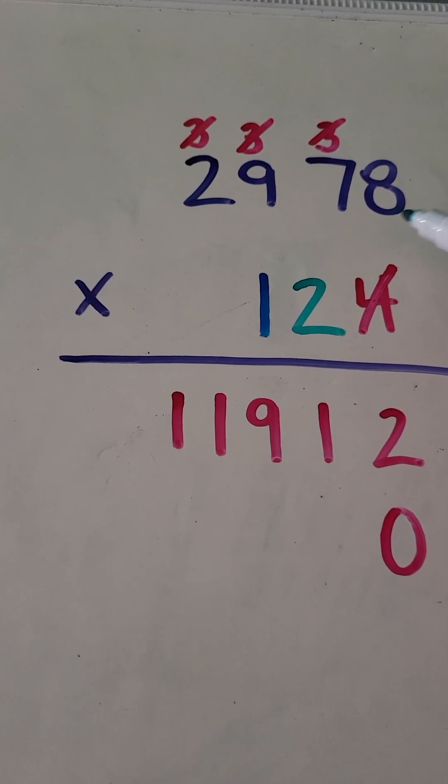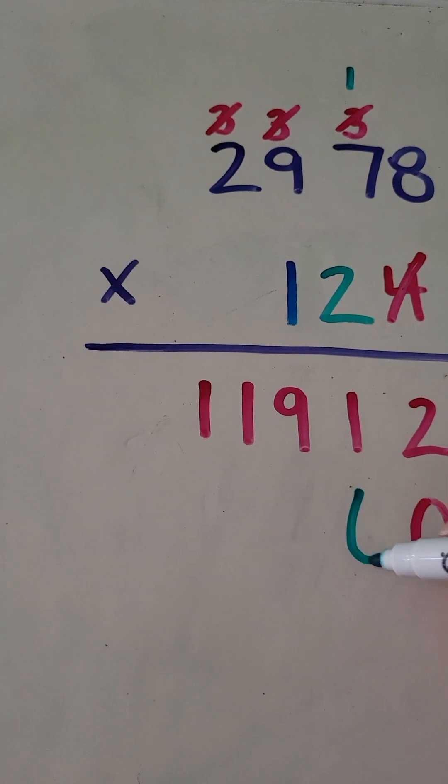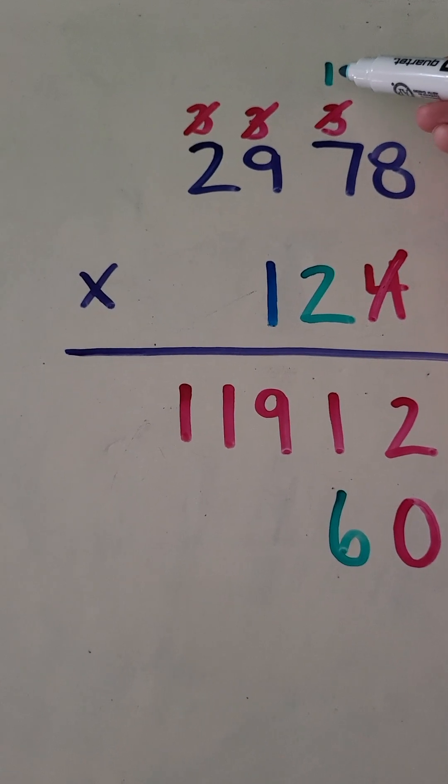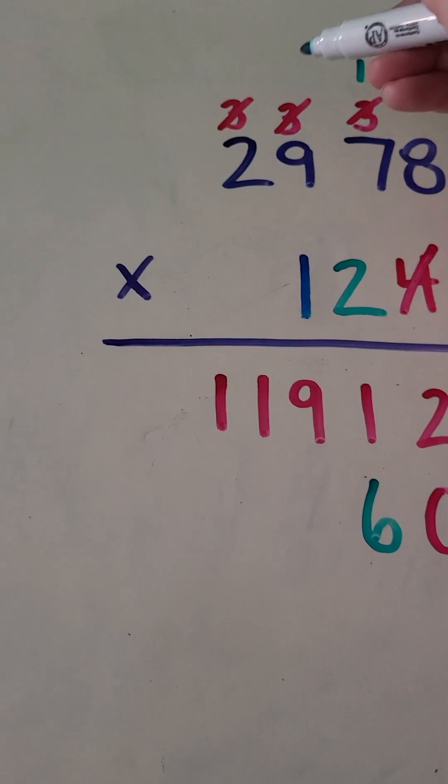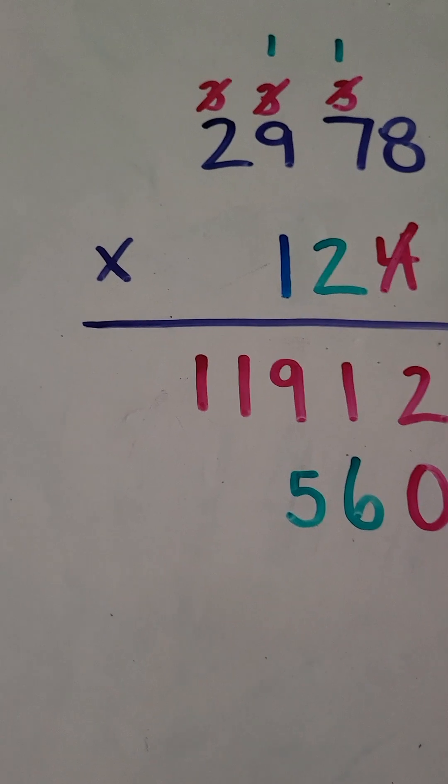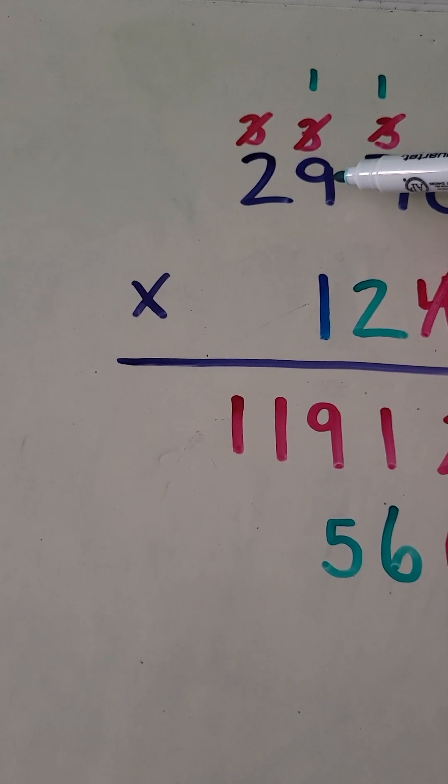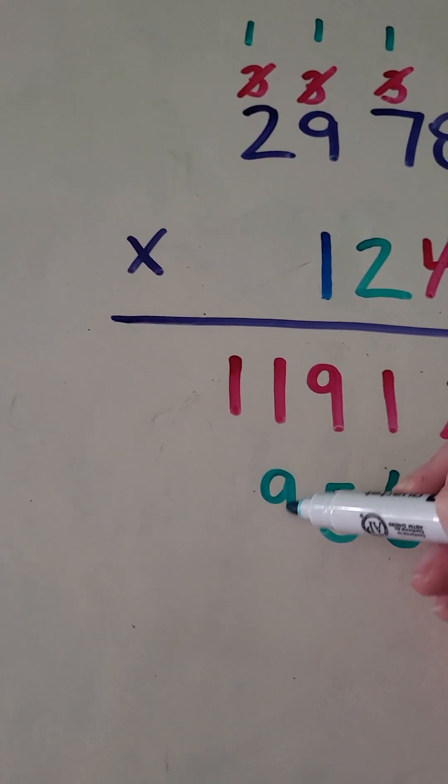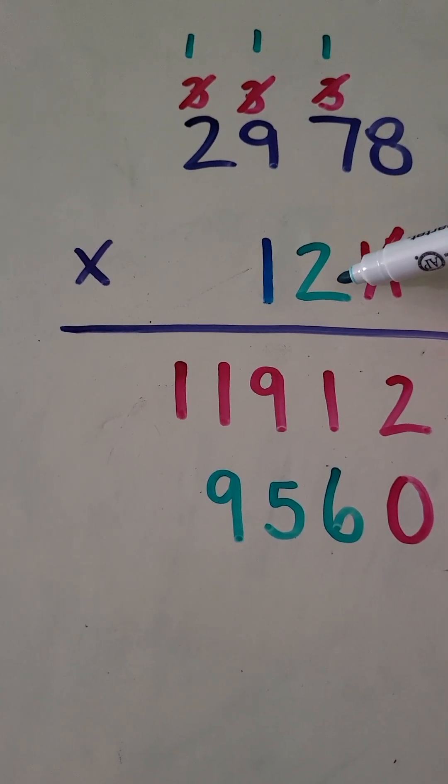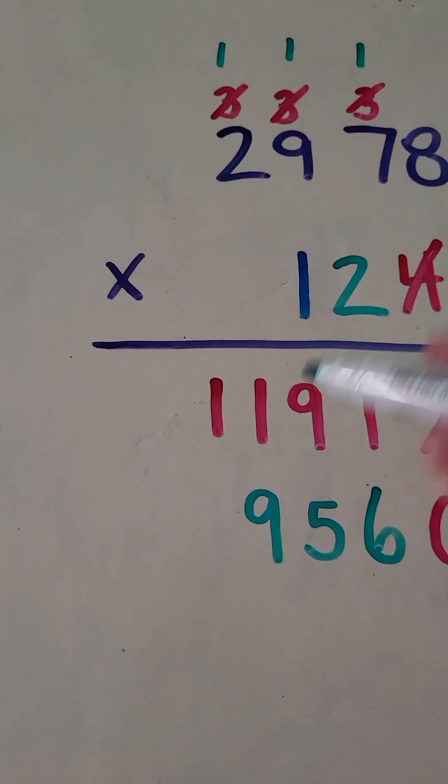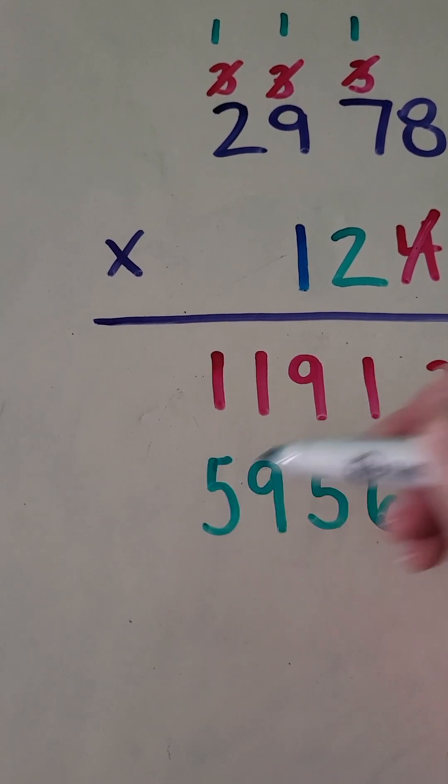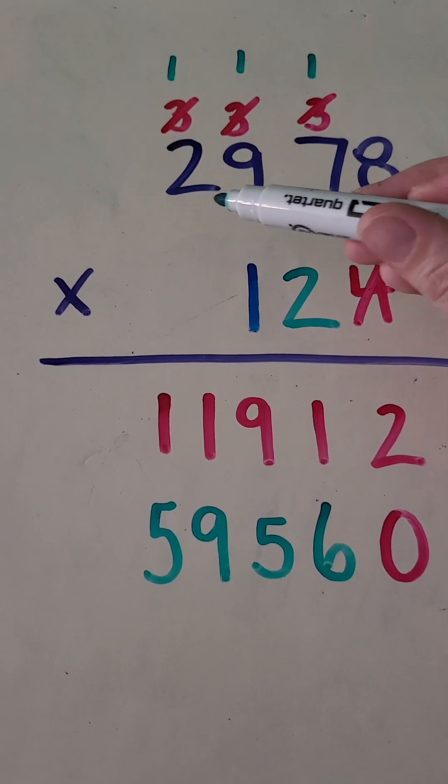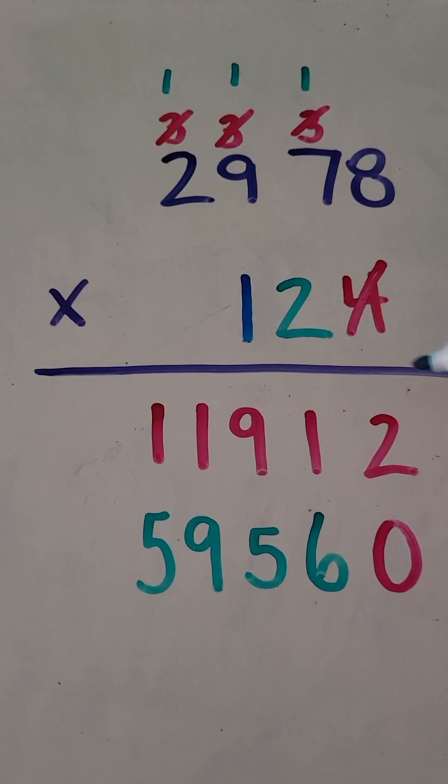So two times eight is 16. Two times seven is 14 plus one is 15. Two times nine is 18 plus one is 19. And then two times two is four plus one is five.